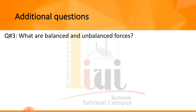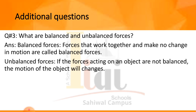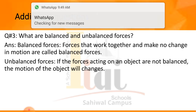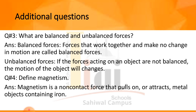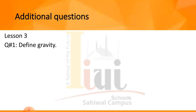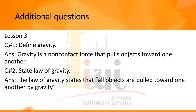Question 3: what are balanced and unbalanced forces? Balanced forces work together and make no change in motion. Unbalanced forces are when forces acting on an object are not balanced, so the motion of the object changes. Question 4: define magnetism — magnetism is a non-contact force that pulls on or attracts metal objects containing iron. Lesson 3 — Question 1: define gravity — gravity is a non-contact force that pulls objects toward one another. The law of gravity states that all objects are pulled toward one another by gravity.